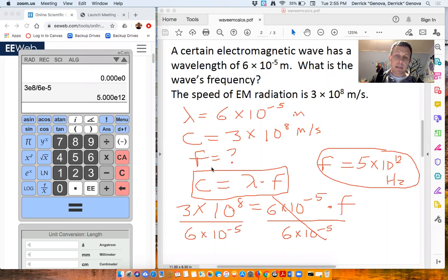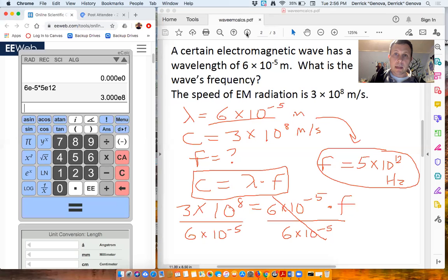One way I can check that whenever we're doing these types of problems is this equation we know is correct. We did not make any mistakes. So if you take your wavelength and you multiply by your frequency, you should get c. So let's just check that out real quick. If I take my wavelength 6e negative 5 times 5e to the 12th, I should get my speed of light. And I do. So that's a good way to check and make sure you've done it properly.